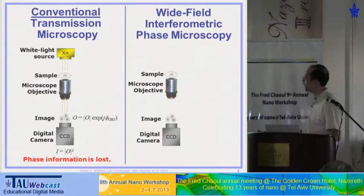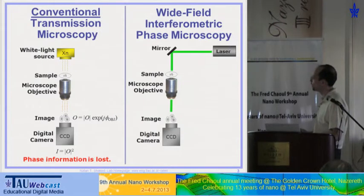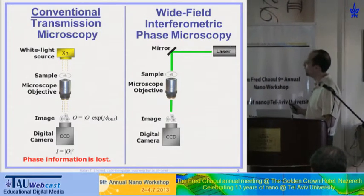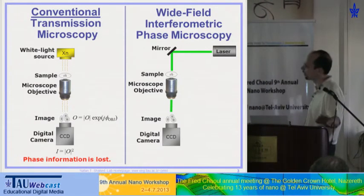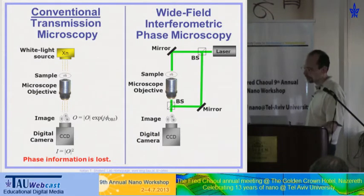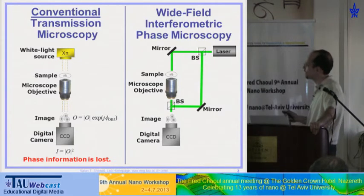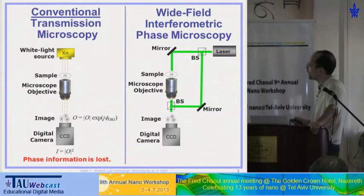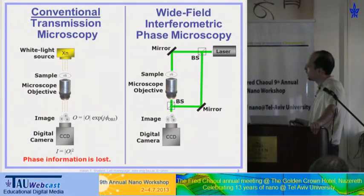In phase microscopy, we use the same sample beam but with a source of a certain degree of coherence — it might be a laser or a broadband source. We split the beam and combine it again. Usually this is done at the input, but I'll show it doesn't have to be done there. In the conventional Mach-Zehnder setup, we split the beam with a beam splitter and combine it just in front of the camera.